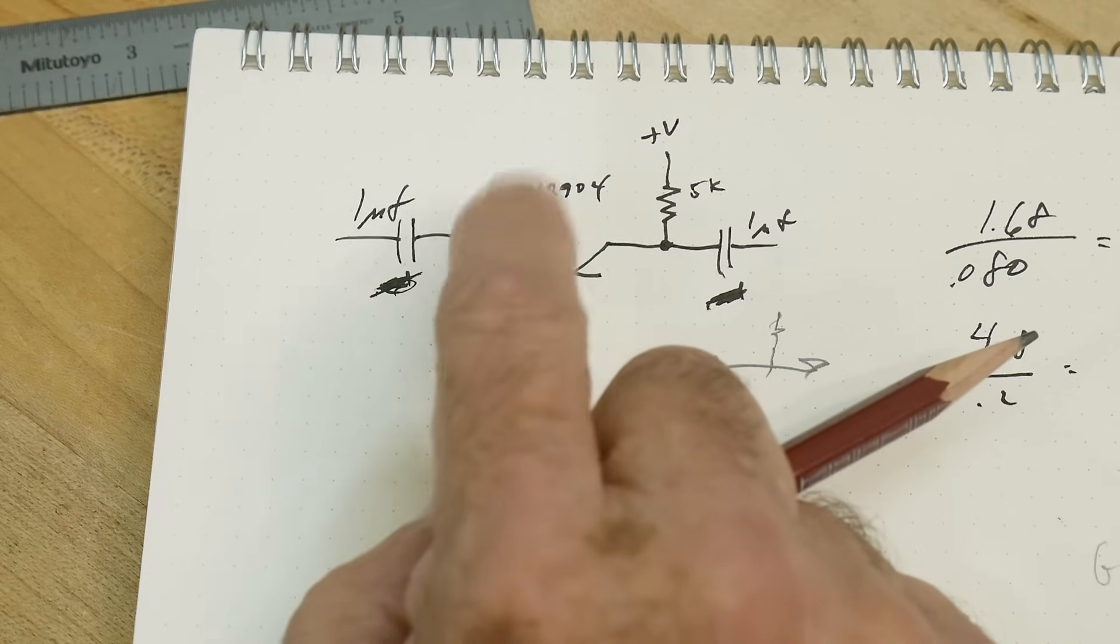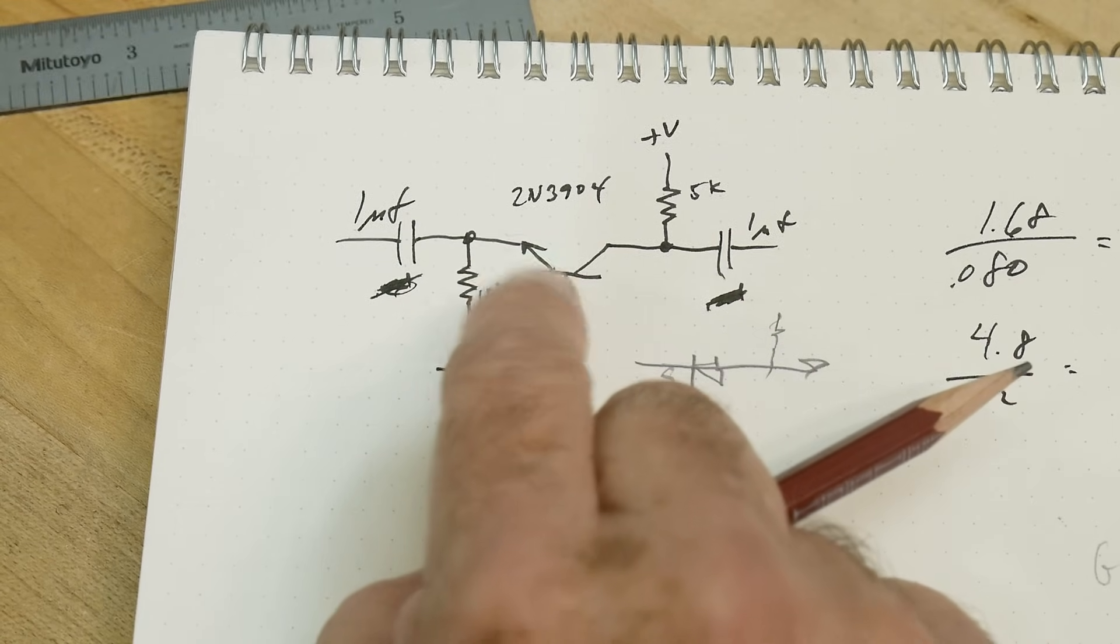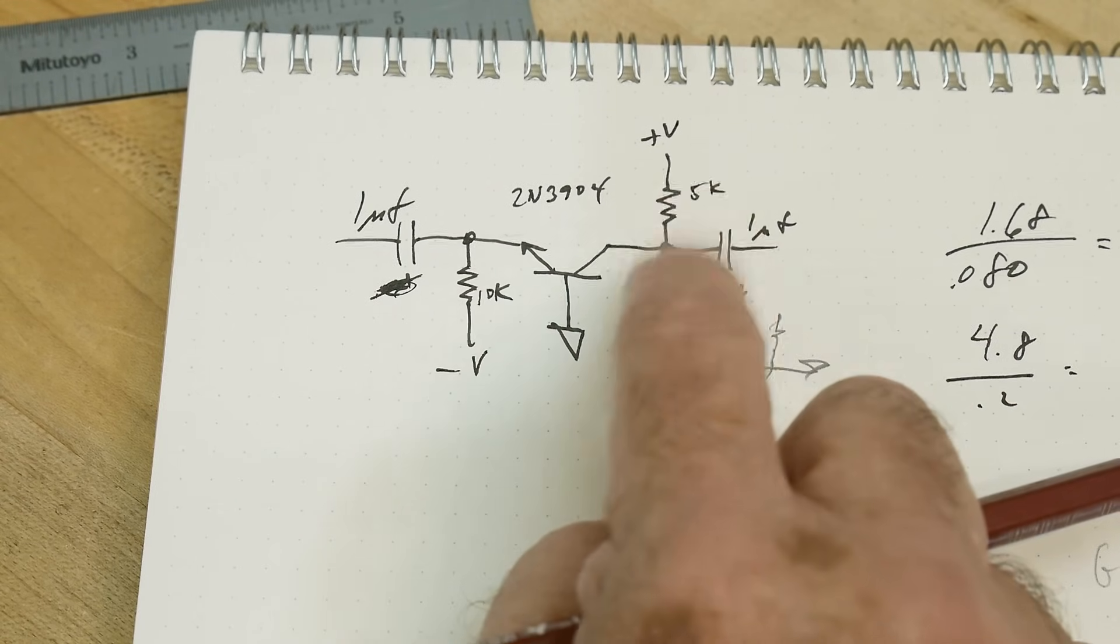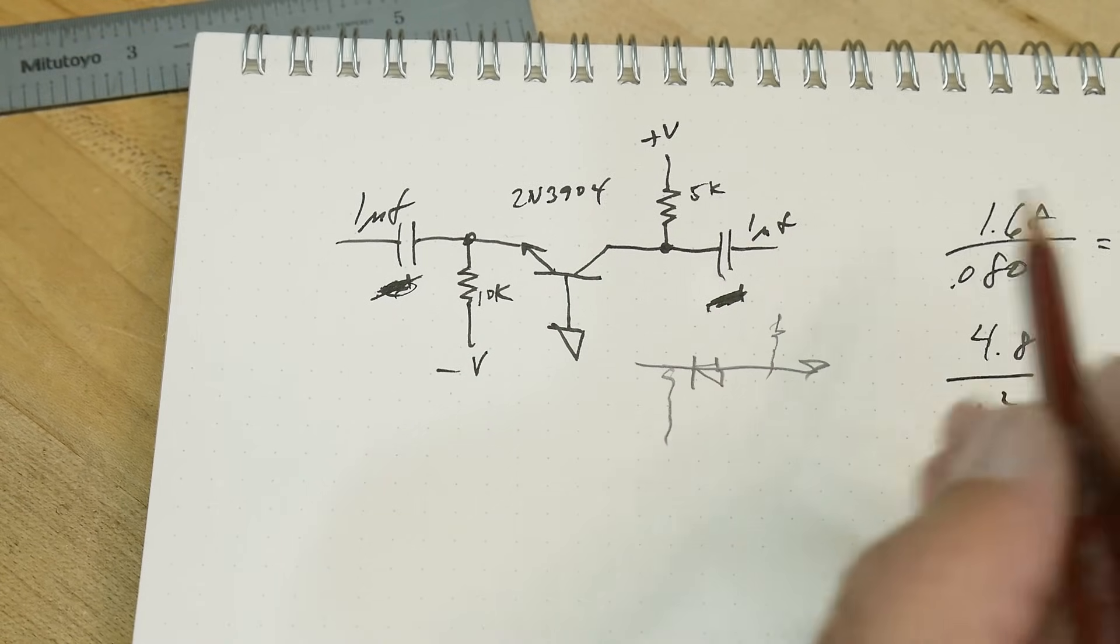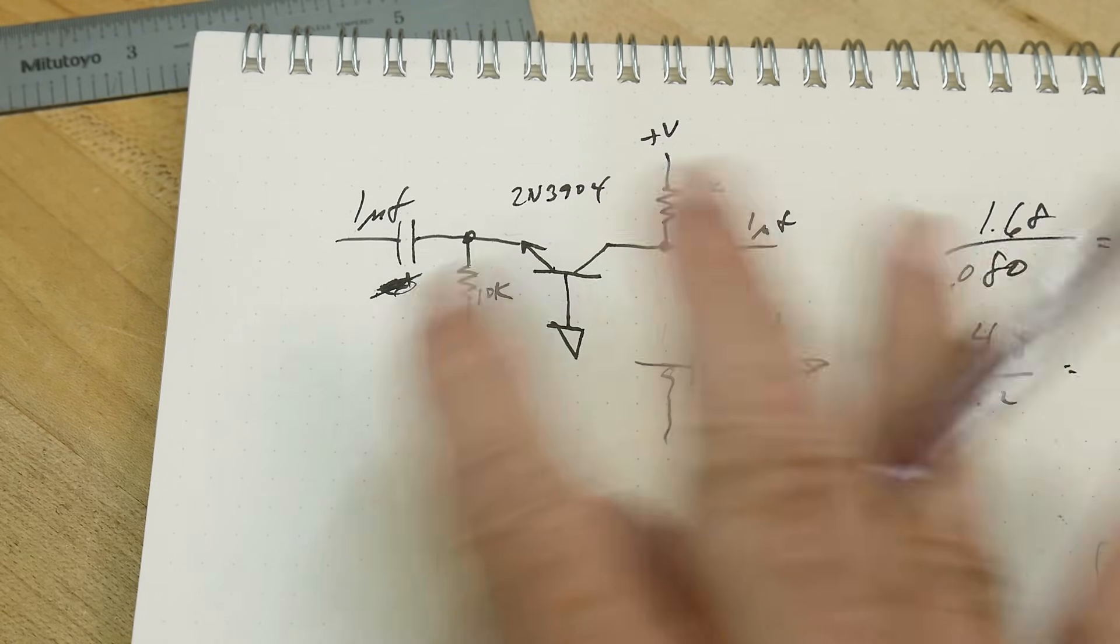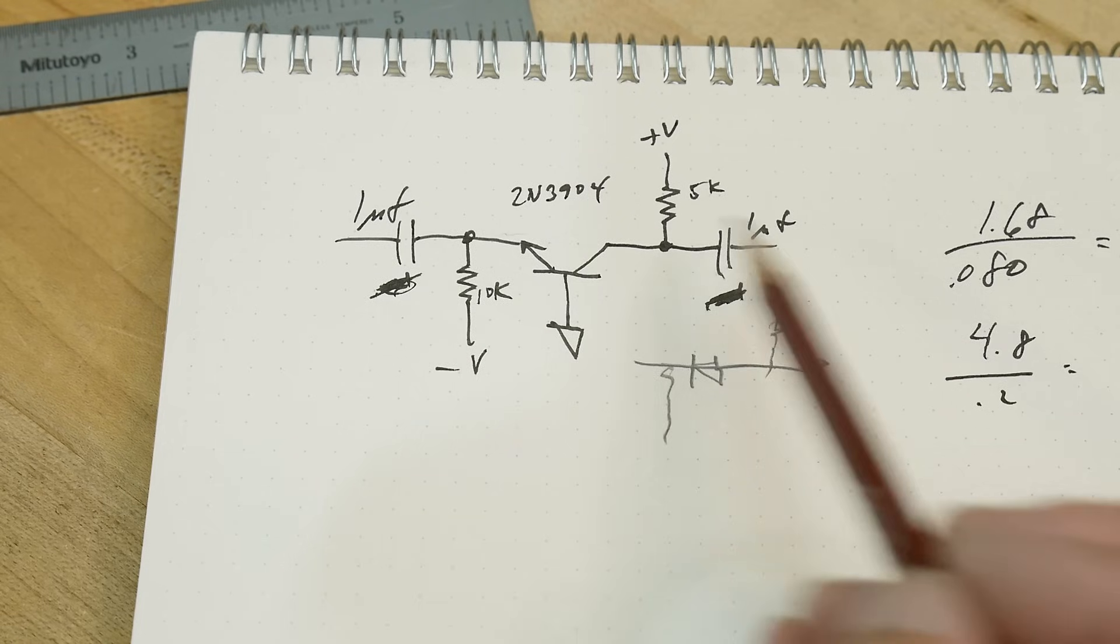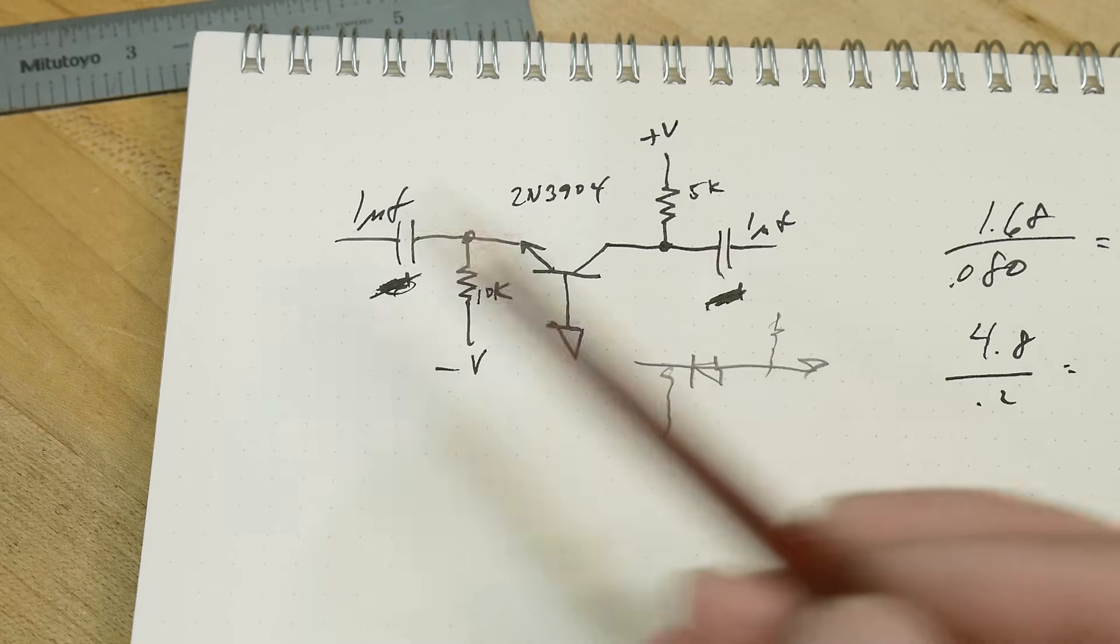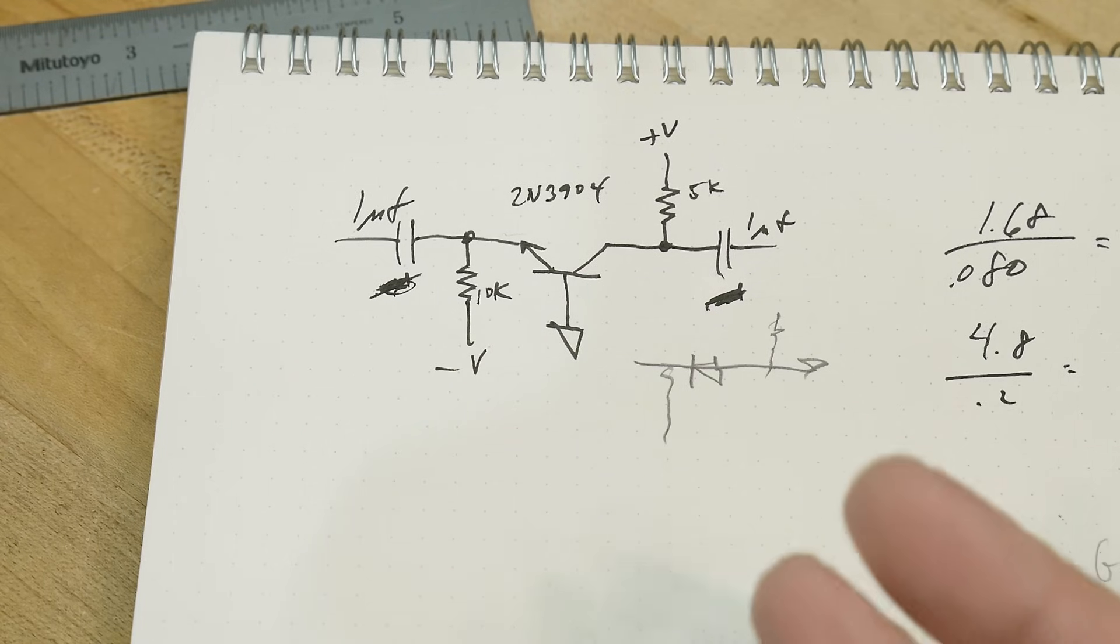Even though we're wiggling on this side, it's kind of like we're changing the base current. If you have wiggles here, a little bit of base wiggles means a lot of collector wiggles. A little wiggle here makes a big wiggle here and you get voltage gain. How much voltage gain do you get?